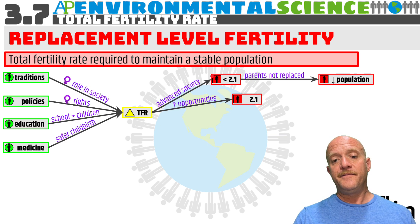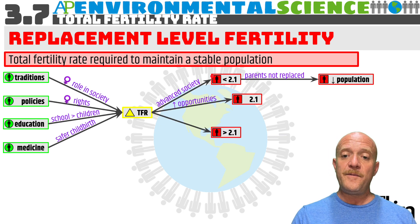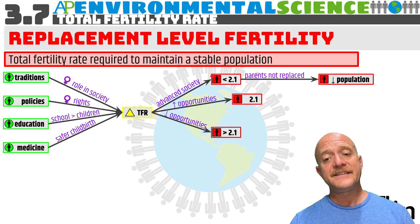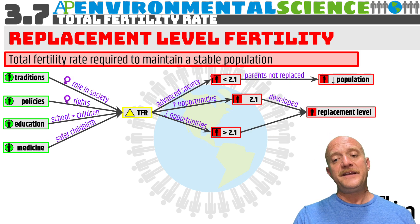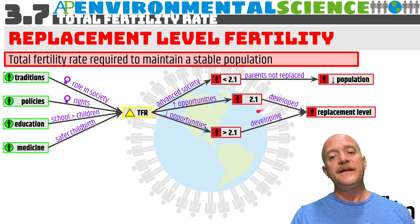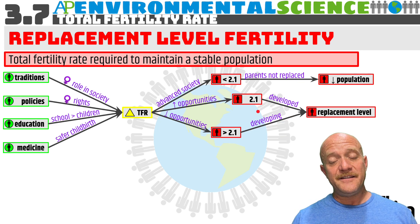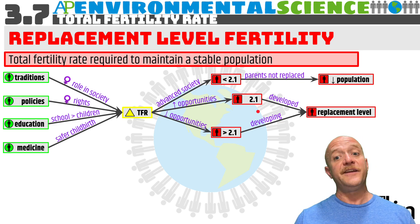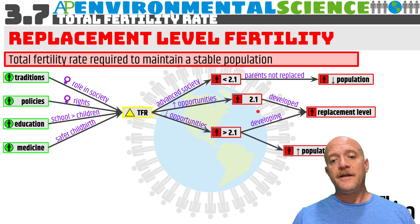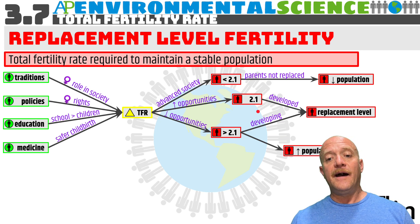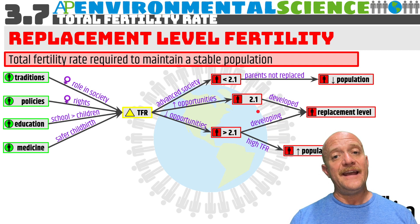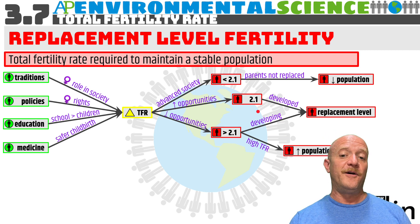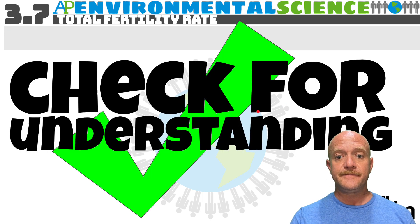If the TFR is exactly 2.1, it reflects more opportunities for women and is typical of a developed country. If it is more than 2.1, there are fewer opportunities for women, which is characteristic of a developing country. Developing countries also have high levels of infant mortality contributing to this. If the total fertility rate is above 2.1, the population will definitely increase.